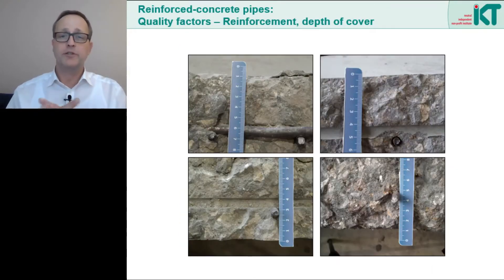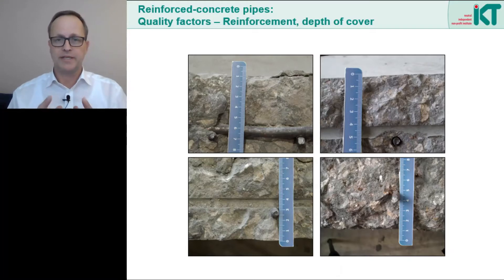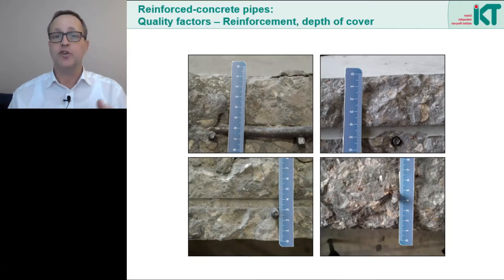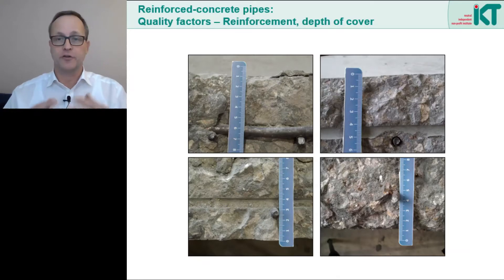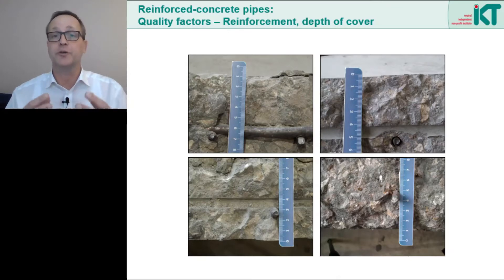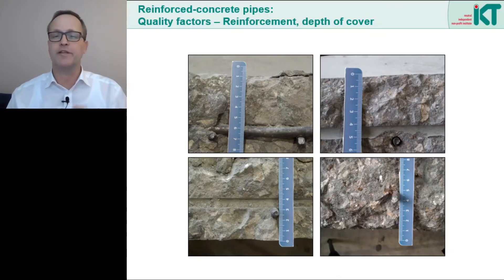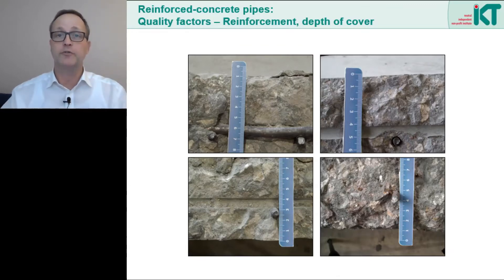A further important quality characteristic is the concrete cover. The steel must be protected against external influences. In sewer pipes, a concrete cover of at least 4 cm is usually required so that in the cracked state of the concrete, the steel is still protected against aggressive media such as sewage. In the pictures we see examples of very different depth of cover of the longitudinal and circumferential reinforcement.